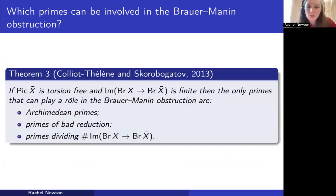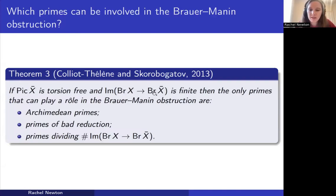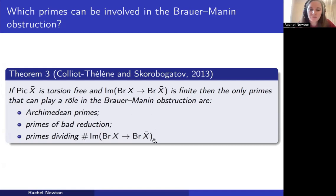The first step toward answering this question was the theorem of Colliot-Thélène and Skorobogatov. With the same assumption that the geometric Picard group is torsion-free, and assuming the transcendental part of the Brauer group — the image of Br(X) inside Br(X̄) — is finite, then the only primes that can play a role in the Brauer-Manin obstruction are the Archimedean primes, the primes of bad reduction, and possibly the primes dividing the size of this transcendental part. In particular, if this image is trivial, the answer to Swinerton-Dyer's question is yes.